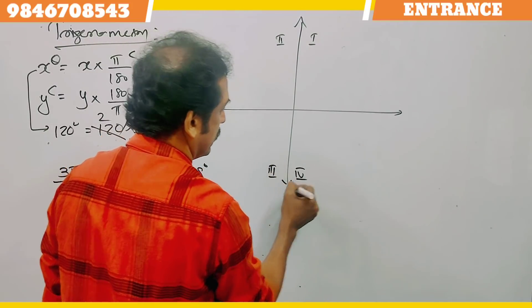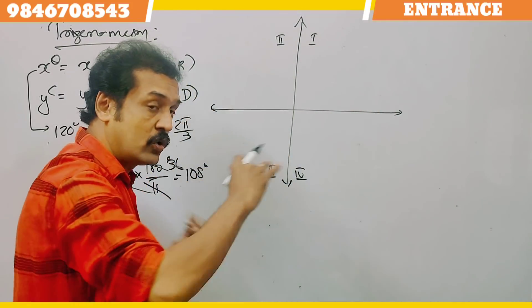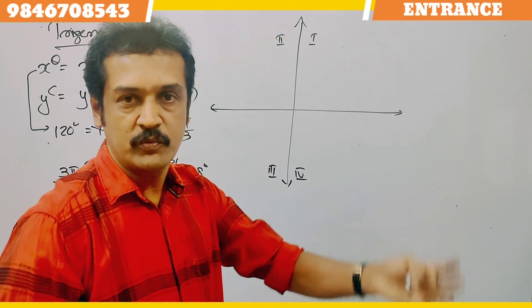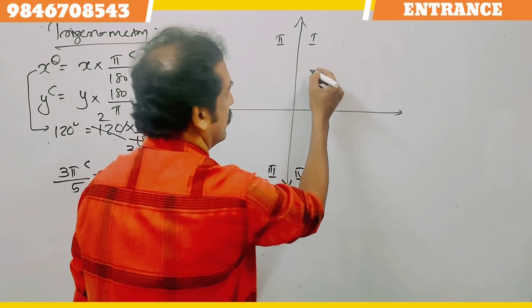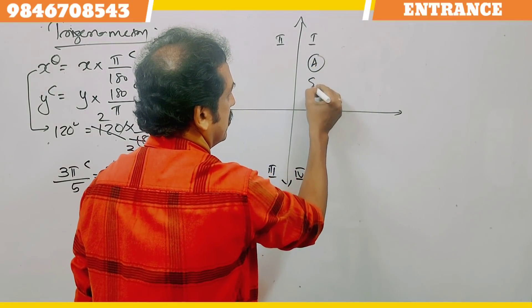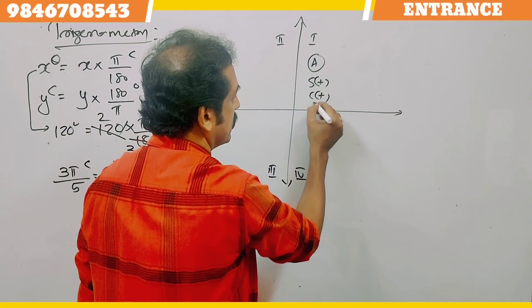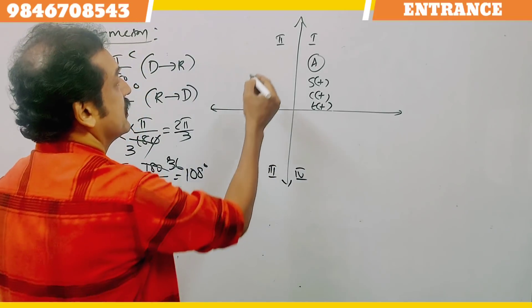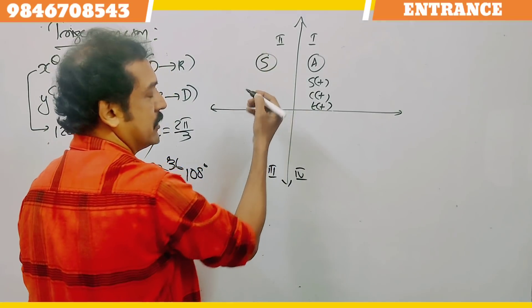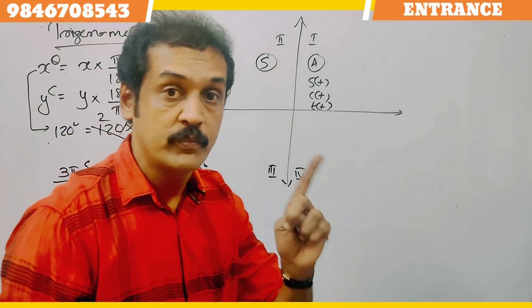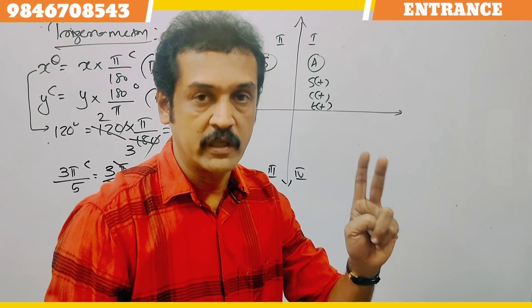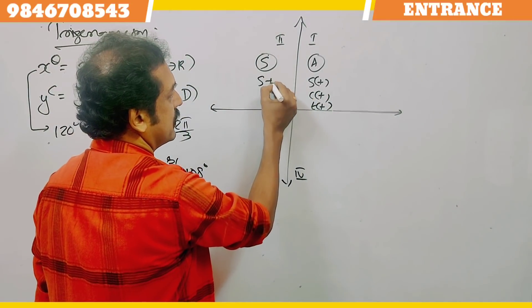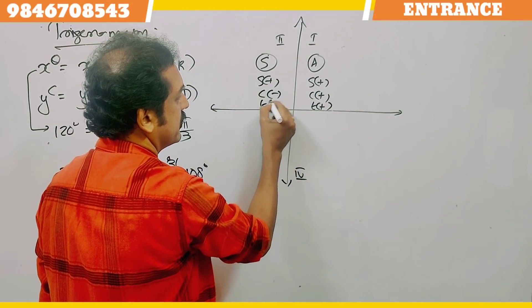There are 4 quadrants. In the first quadrant, all trigonometric functions are positive — sin is positive, cos is positive, tan is positive. In the second quadrant, sin is positive, cos is negative, and tan is negative.